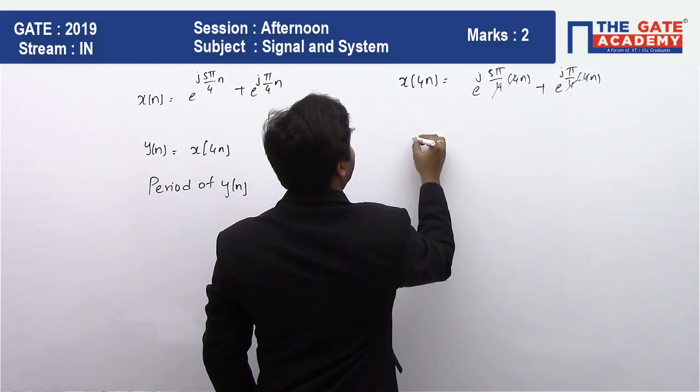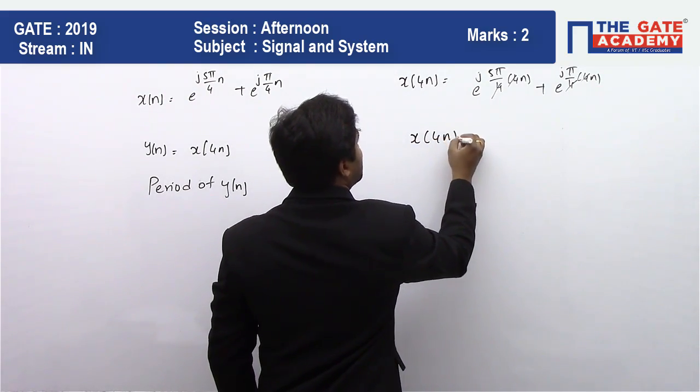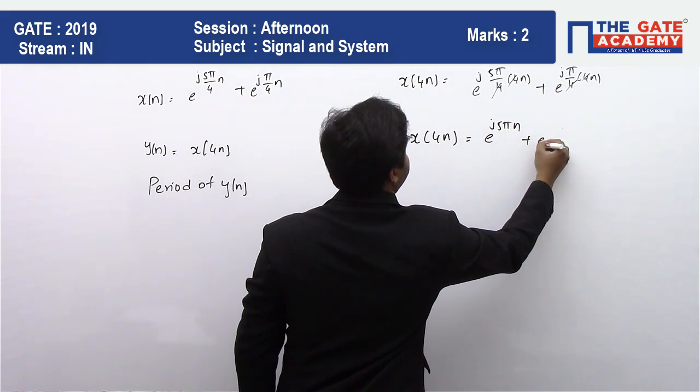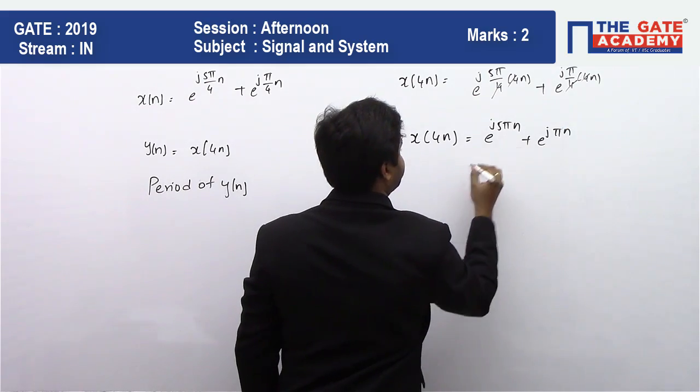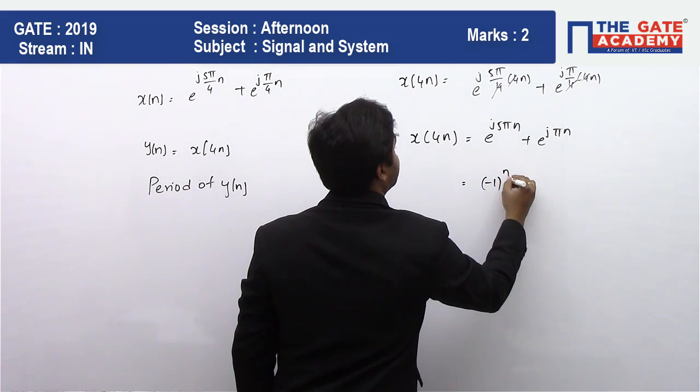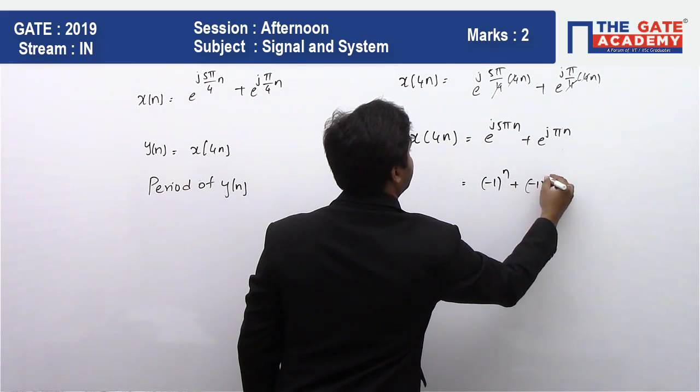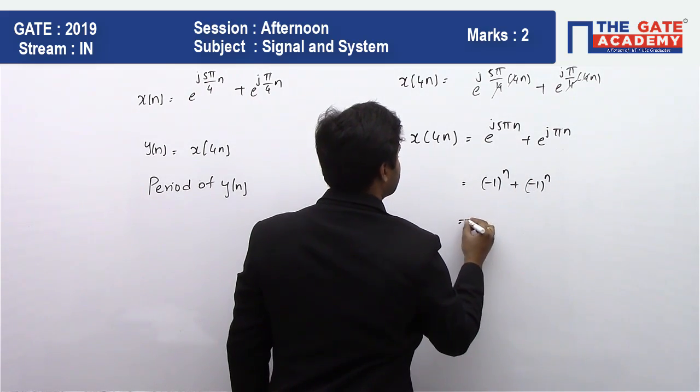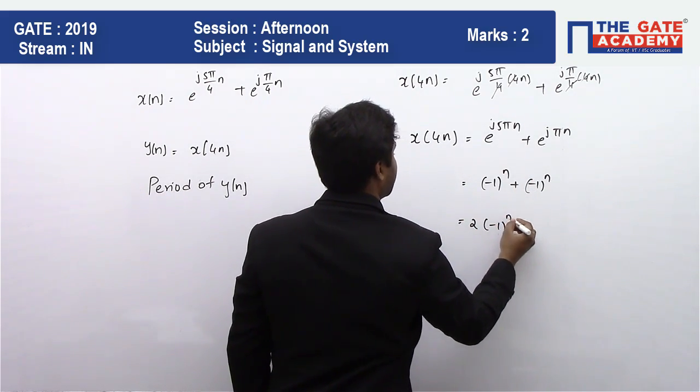Therefore, we will have x(4n) is equal to e^(j5πn) plus e^(jπn). So I can write it as e^(j5π) is going to be equal to (-1)^n plus (-1)^n, because you know e^(jπ) is also equal to -1. So it is 2 times (-1)^n, which is nothing but x(4n), which is our function y(n).